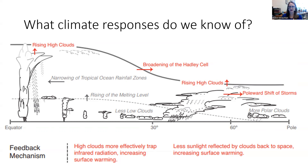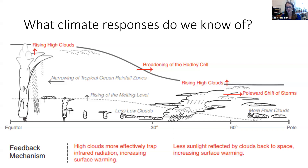The Hadley cell controls precipitation at latitudes of 30 degrees north and south, and that band is broadening — rain is actually moving both north and south, away from the equator. There's also a poleward shift of storms, with more storms making it to the Arctic Ocean and Antarctica. This is causing less sunlight to be reflected by clouds back into space, increasing surface warming.